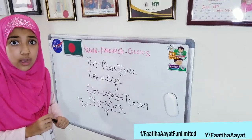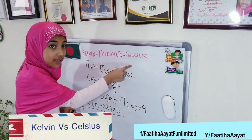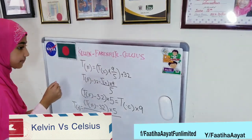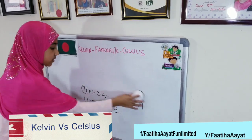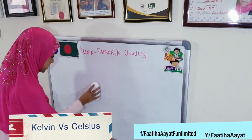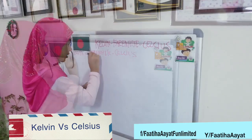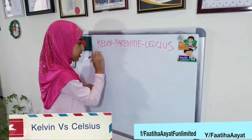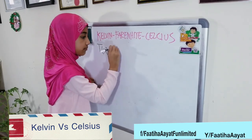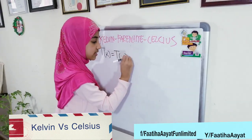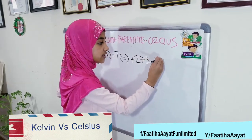Now I'm going to show you how you can convert the Kelvin to the Celsius and the Celsius to the Kelvin. First, I'm going to show you how to convert the Celsius to the Kelvin. Temperature measured in Kelvin is equal to the temperature measured in degrees Celsius, plus 273.15.